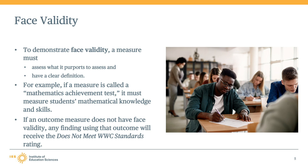Let's examine face validity. An outcome measure must capture what it claims to measure for the study to appropriately label the intervention's effect. The WWC says that an outcome measure has face validity when it has a clear definition and captures what it claims to measure. The WWC requires alignment between the description and the content of the measure — for example, if a measure is called a math achievement test, does it measure students' math knowledge and skills? If an outcome measure does not have face validity, any finding based on that measure will receive a research rating of does not meet WWC standards.